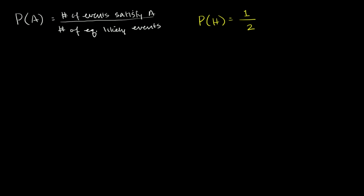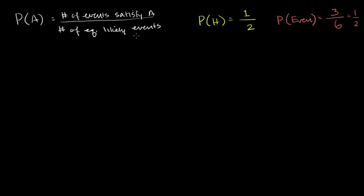If you took a die and said the probability of getting an even number when you roll it — there are six equally likely events, and there are three even numbers you could get: two, four, or six. So once again, you have a one-half chance of that happening. This is a really good model where you have equally likely events.